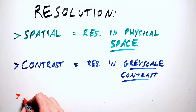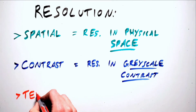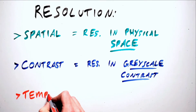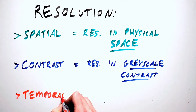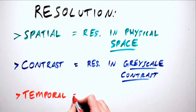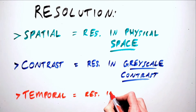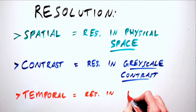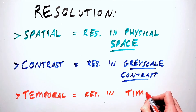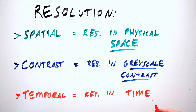Temporal resolution refers to the ability to acquire images in a short amount of time. This is important in specific cases like cardiac CT, where acquiring data very quickly between cycles of cardiac contraction is necessary. Basically, temporal resolution refers to time and the shortest amount of time in which images can be acquired.